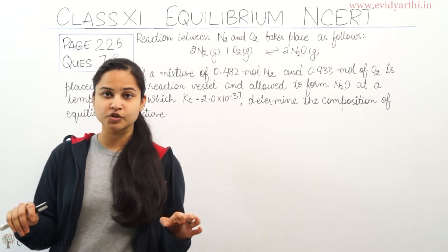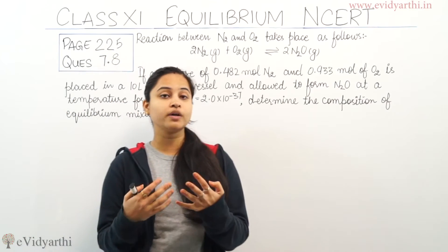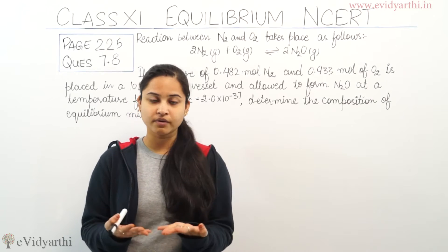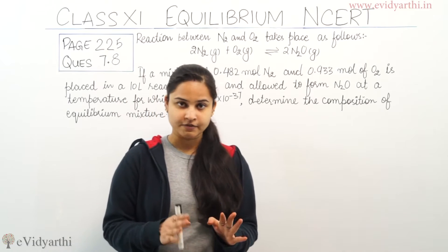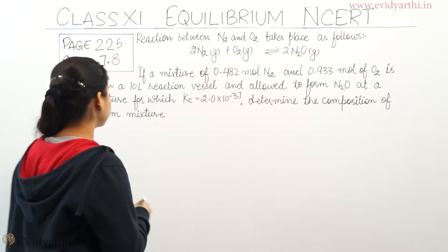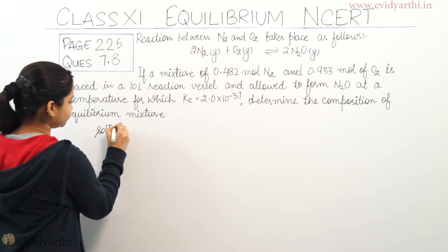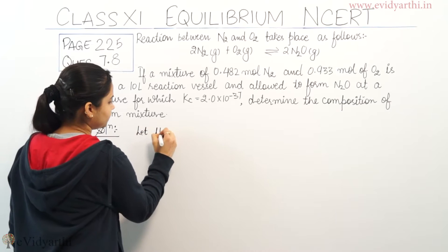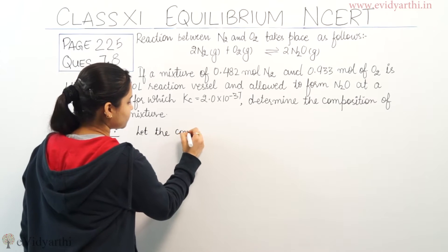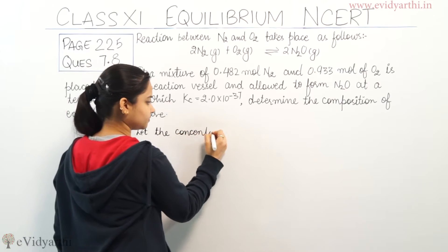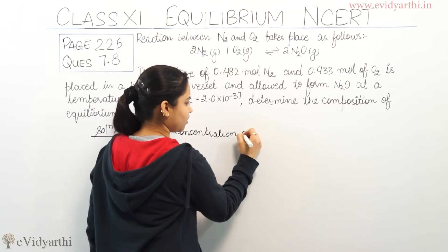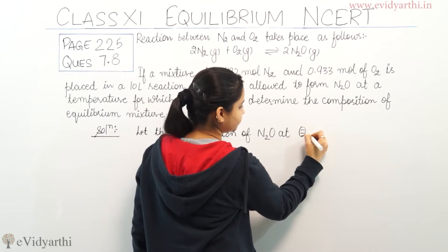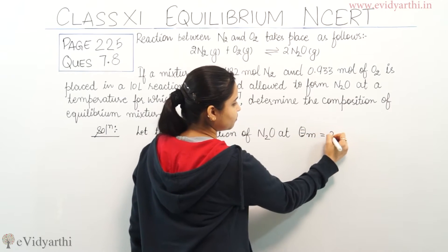We need to determine the composition of the equilibrium mixture — specifically, we need to calculate the concentration of N₂O at equilibrium. Let the concentration of N₂O at equilibrium be equal to X.